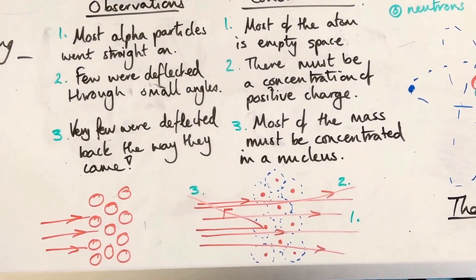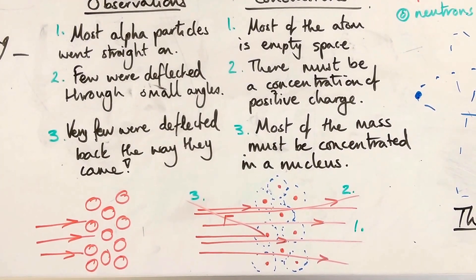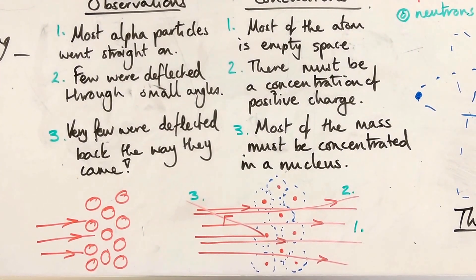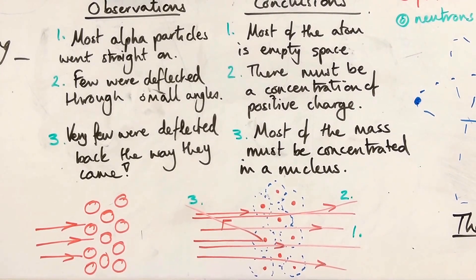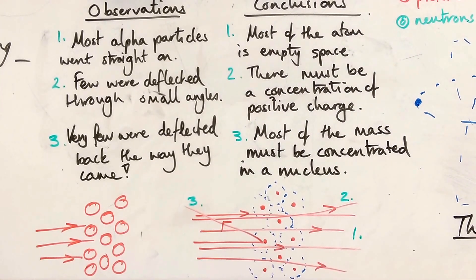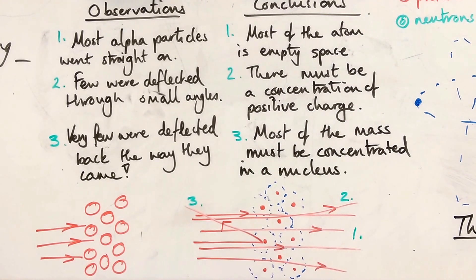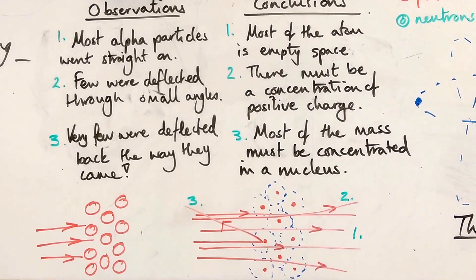A few of them, number two, were deflected through the small angles but carried on through nonetheless. And very, very few of them actually almost collided with something with a lot of mass and positive charge and reflected the way they came.